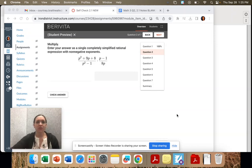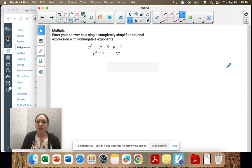Question two, we are multiplying rational expressions. So first step, step one, is factor everything.